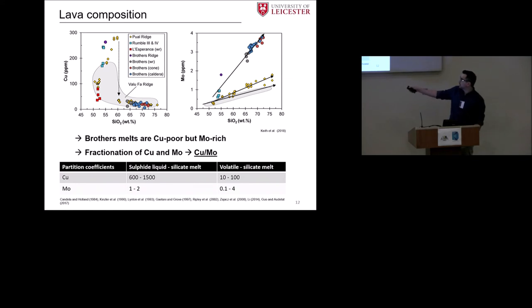So in other words we also could have a volatile contribution here and a release of magmatic volatiles from the melt together with sulfide liquid segregation which fractionates copper and moly from our melt.